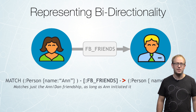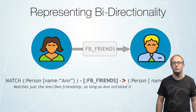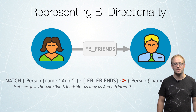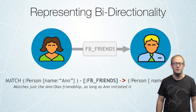As in this case, Ann FB_FRIENDS Dan. That indicates perhaps that Ann was the one who initiated the friend request. Now we can match that relationship in that direction by saying person name is Ann, arrow, FB_FRIENDS, another arrow, the person whose name is Dan.